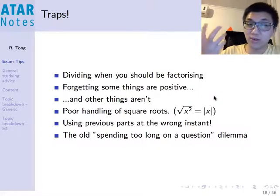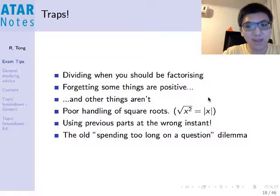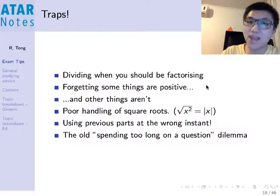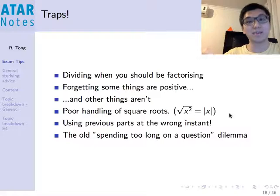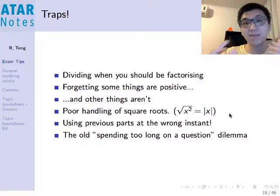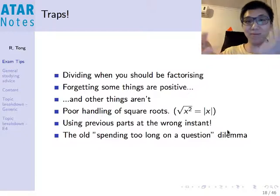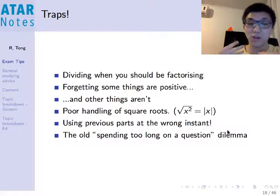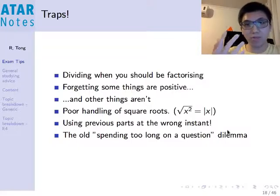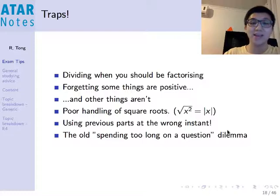One thing 3-unit and 4-unit students alike often forget — mainly because it's not really taught well — is that when you square root x squared, what you actually get is the absolute value. So if I square root 2x squared, I get root 2 times the absolute value of x. The only time you can safely remove the absolute values is when you know x is a non-negative number. Keep that definition of absolute value in mind.